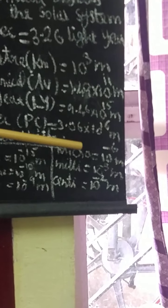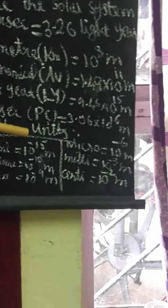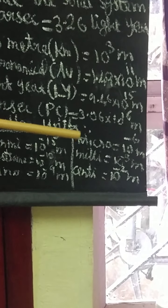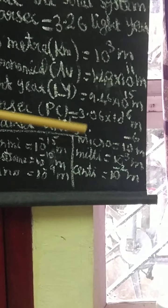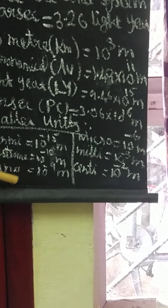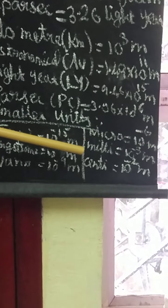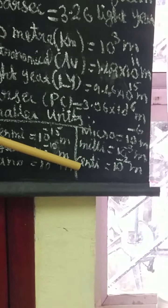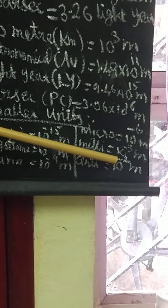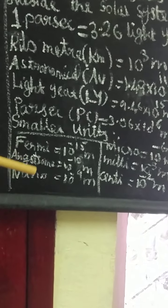Micro is equal to 10 to the power minus 6 meters. Micro and nano units are used when measuring atoms or molecules. Milli is a tiny unit equal to 10 to the power minus 3 meters. Centi is equal to 10 to the power minus 2 meters, which is centimeter. So the smaller units are: fermi, angstrom, nano, micro, milli, and centi.